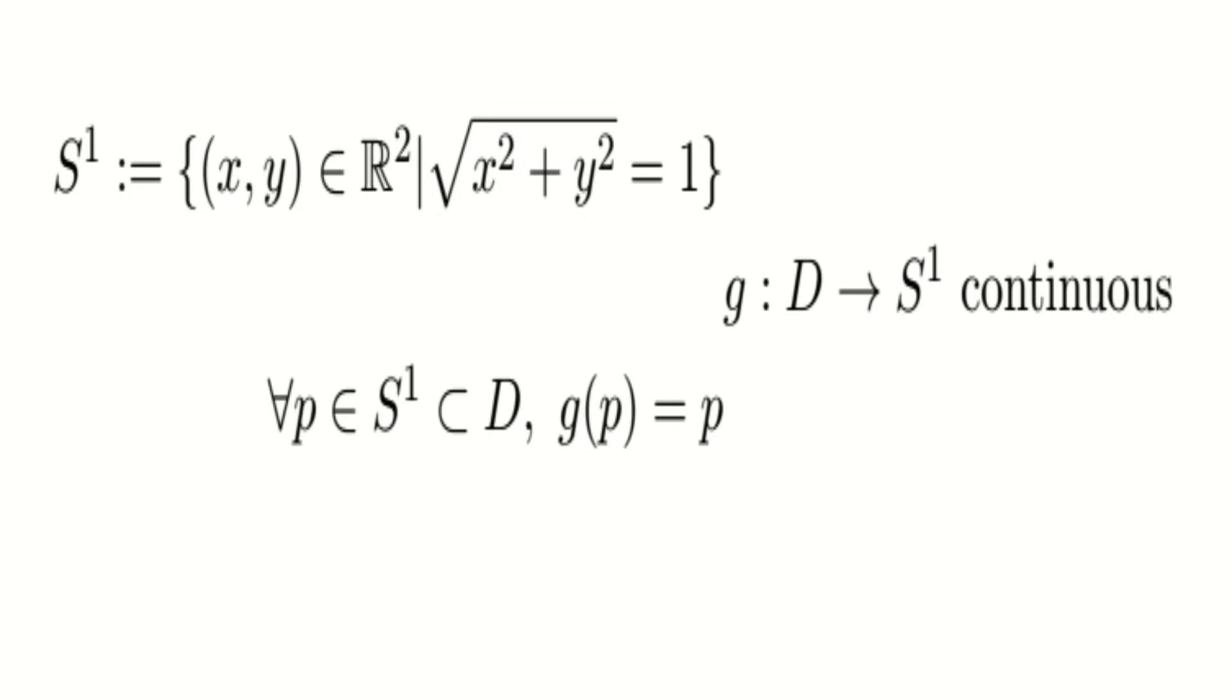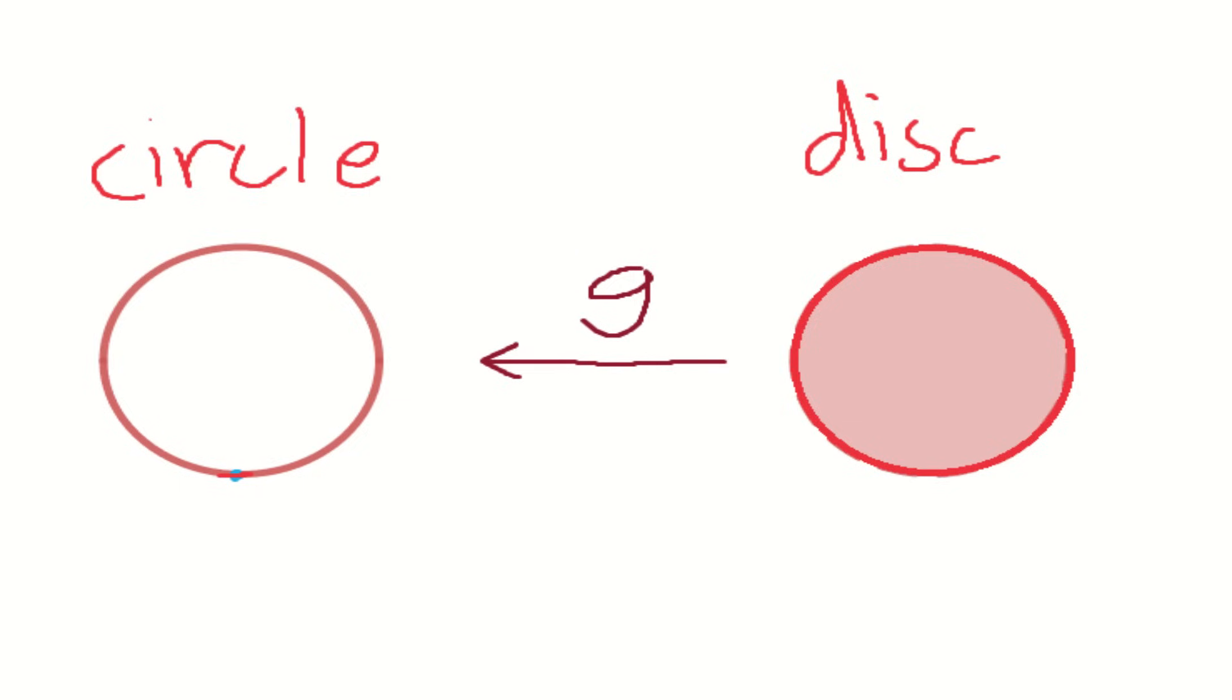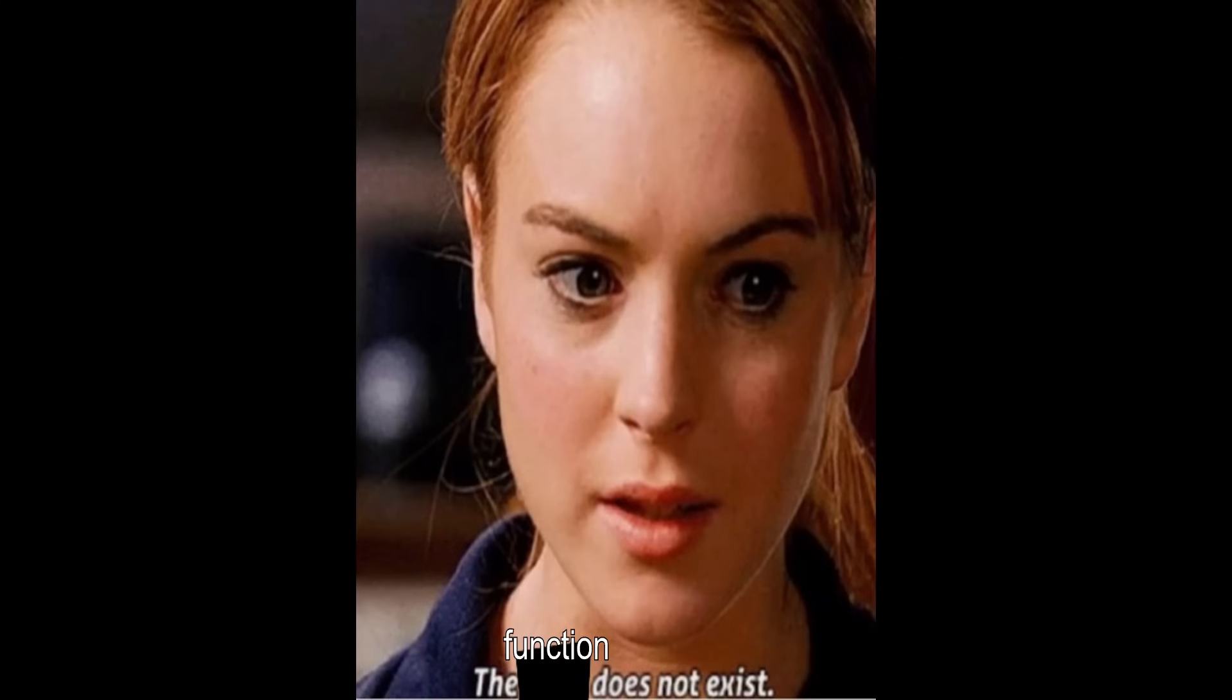Therefore, from our continuous function F, we get a new continuous function G that maps the whole disk to the circle, and keeps what was already on the circle fixed in place. Our whole proof of this theorem rests on the fact that this map G cannot exist, resulting in F being non-existent as well.